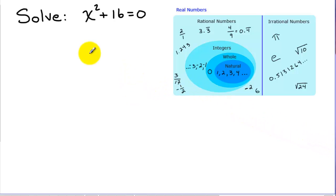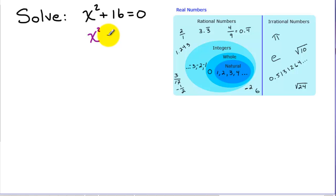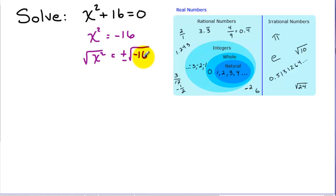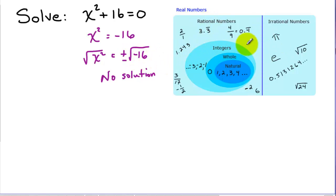Let's introduce complex numbers by looking at this quadratic equation here. If you remember when we talked about difference of two squares, a sum of two squares was not factorable. Maybe we could solve this using our square root method — we get x squared by itself, then square root both sides, taking both the positive and negative square root of negative 16. But at this point we would stop and say no solution, because in our set of real numbers there is no square root of negative 16. There is no real number that if we multiply it times itself can be a negative number.